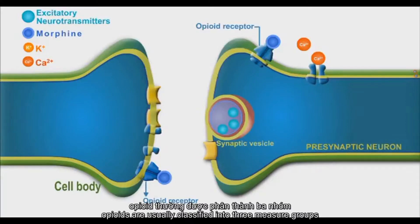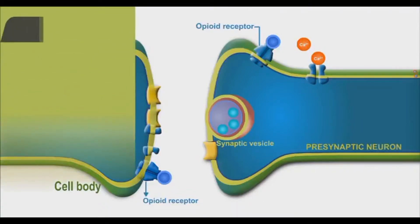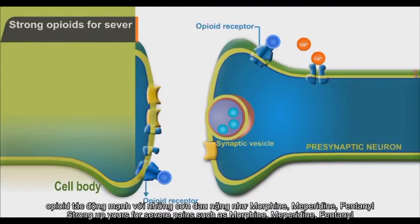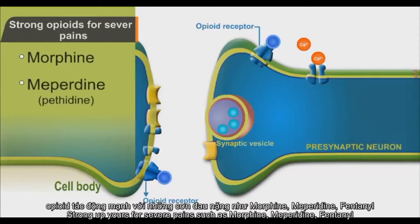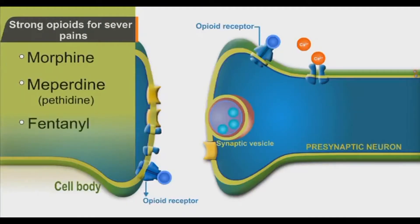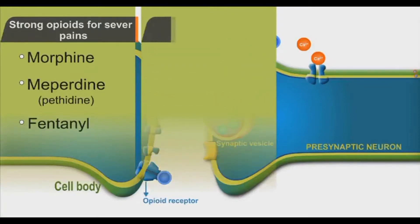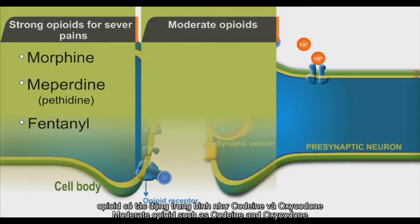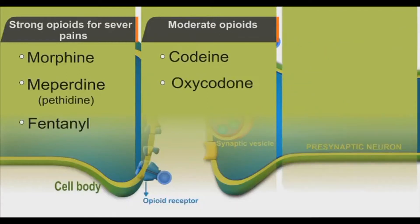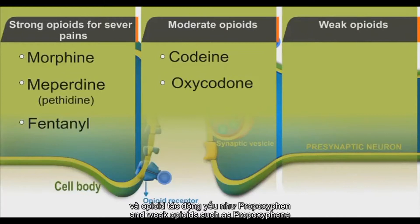Opioids are usually classified into three major groups: strong opioids for severe pain, such as morphine, meperidine (also called pethidine), and fentanyl; moderate opioids such as codeine and oxycodone; and weak opioids such as propoxyphene.